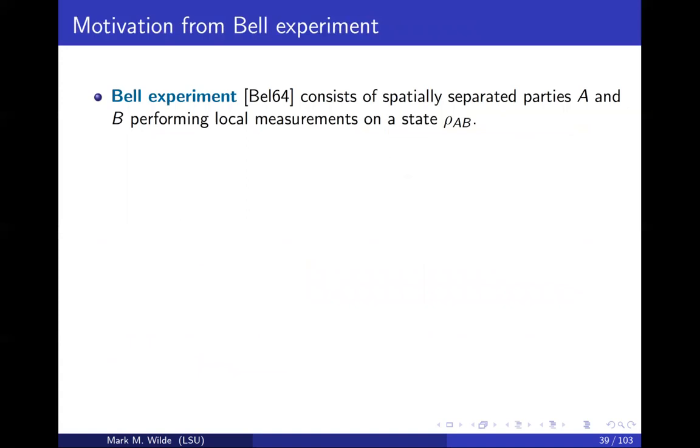So what is the motivation of the definition of entanglement? It comes from Bell experiments. A Bell experiment is a way to demonstrate that entanglement cannot be explained by a classical theory.